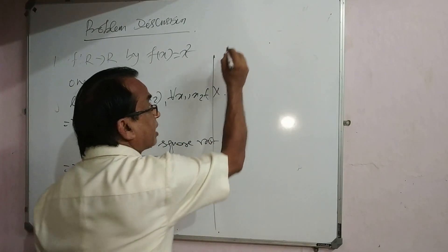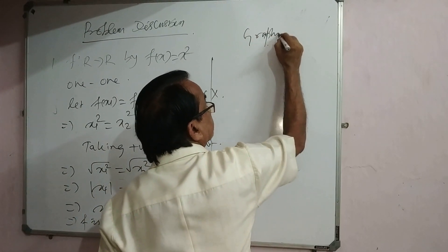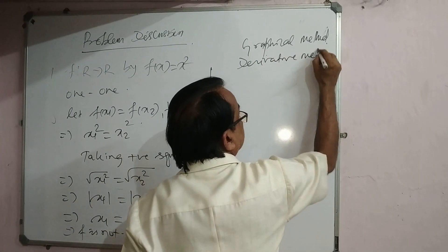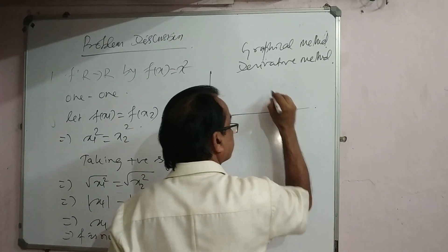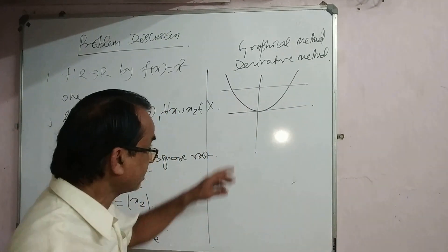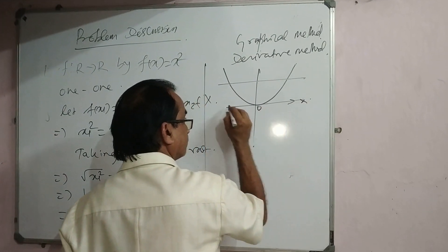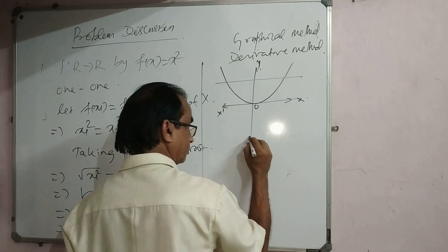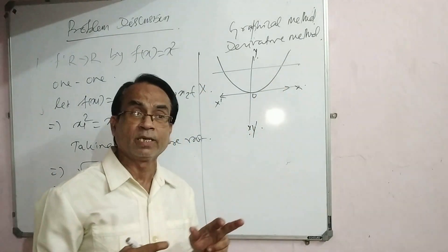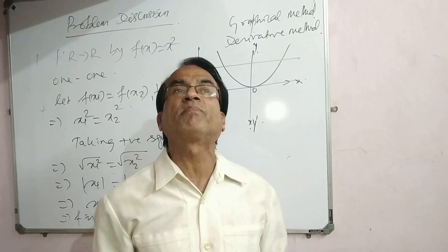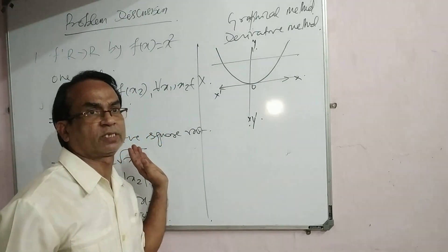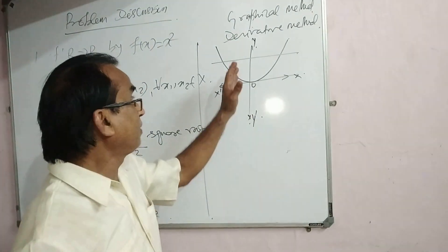Now coming to the graphical method: any line parallel to x-axis intersects the curve at two points. This means two elements of the domain have the same image. It is many-one function, not one-one function. Within few seconds we can answer this.